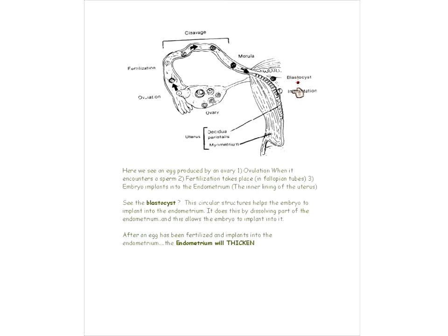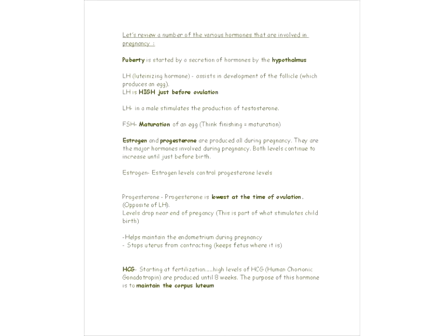After the zygote is implanted, the endometrium is going to thicken. That's what happens in one of the first stages of pregnancy — the endometrium starts to thicken.